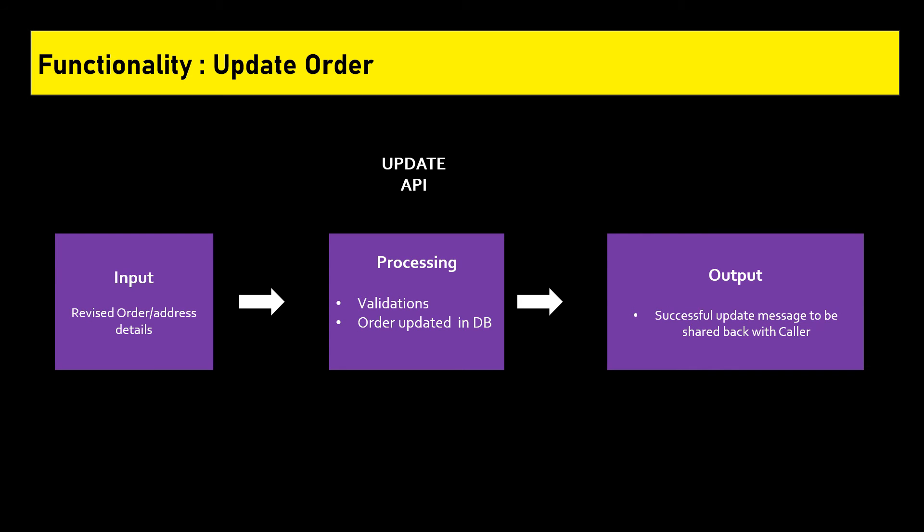Let's create an API for updating order details. This API also has three key components: inputs, processing logic, and output. For order update, at a minimum we need the order number and the revised order details or updated delivery address. In the processing part, before updating the order in the database, there is validation: if the time is greater than three hours before delivery, then the order details are updated in the database and the updated order details are returned. If the time is within three hours, an error message is returned. The output returns the successful updated details to the calling application, or an error message if the time limit is not met.